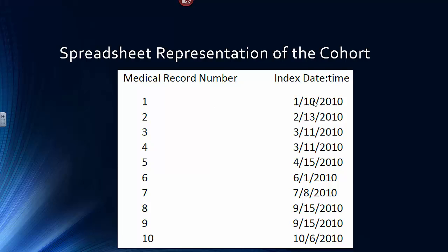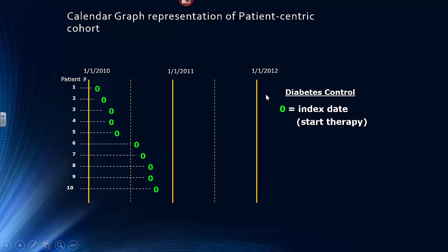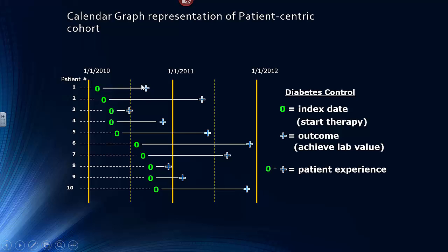Here is a calendar graph representation of a patient-centric cohort. On one axis you have the passage of calendar time from 1-1-2010 to 1-1-2011, and on the other you have individual patients and their medical record number identifiers. Here you can see the moment when each patient first appeared at the clinic and declared themselves as diabetic. Members of the cohort are then followed forward in time to an outcome — in this case, controlling their diabetes and their hemoglobin A1C — and you evaluate the success or failure of the management of this cohort.